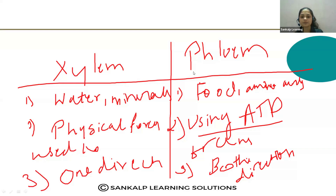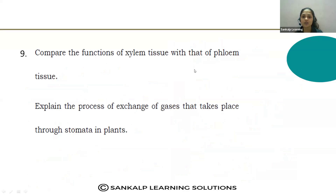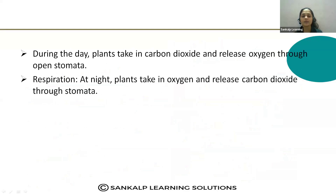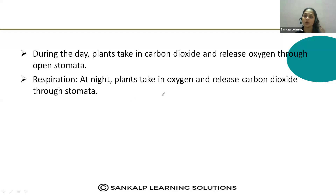Explain the process of exchange of gases through the stomata in plants. During the day, in the presence of sunlight, plants perform photosynthesis and take in carbon dioxide while releasing oxygen through the stomata. At night, plants also respire — they take in oxygen and release carbon dioxide through the stomata. This is how stomata are helpful for the exchange of gases.